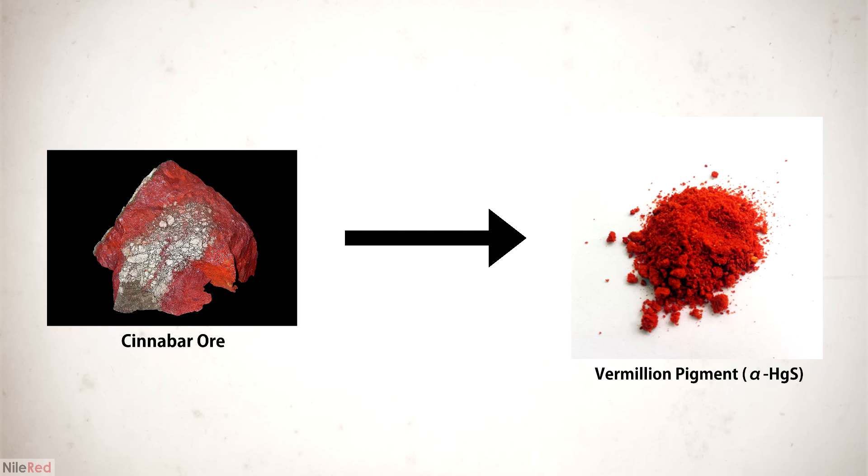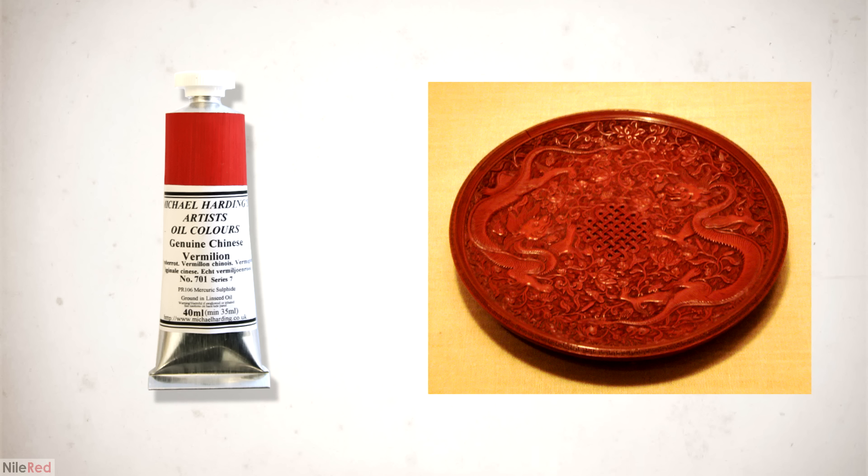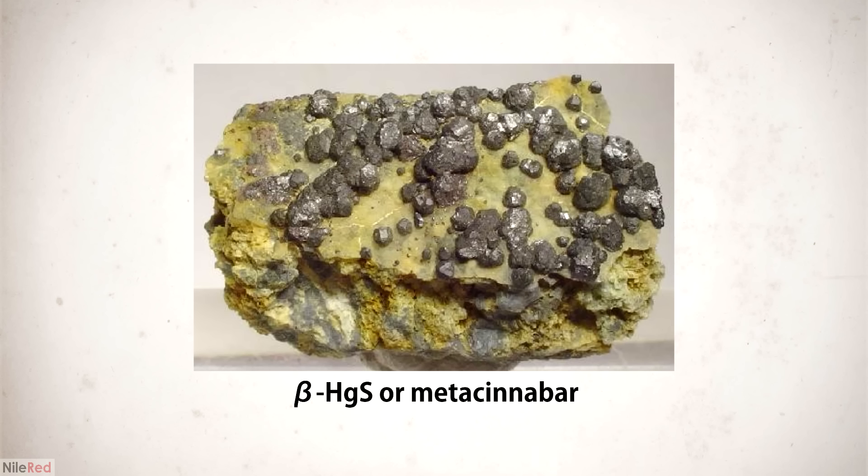Historically, red cinnabar was isolated, ground up, and used as a pigment called vermilion. The pigment was used in many things like paints, cosmetics, and carved Chinese lacquerware. However, due to toxicity issues, it has been almost completely phased out and replaced by safer synthetic pigments.